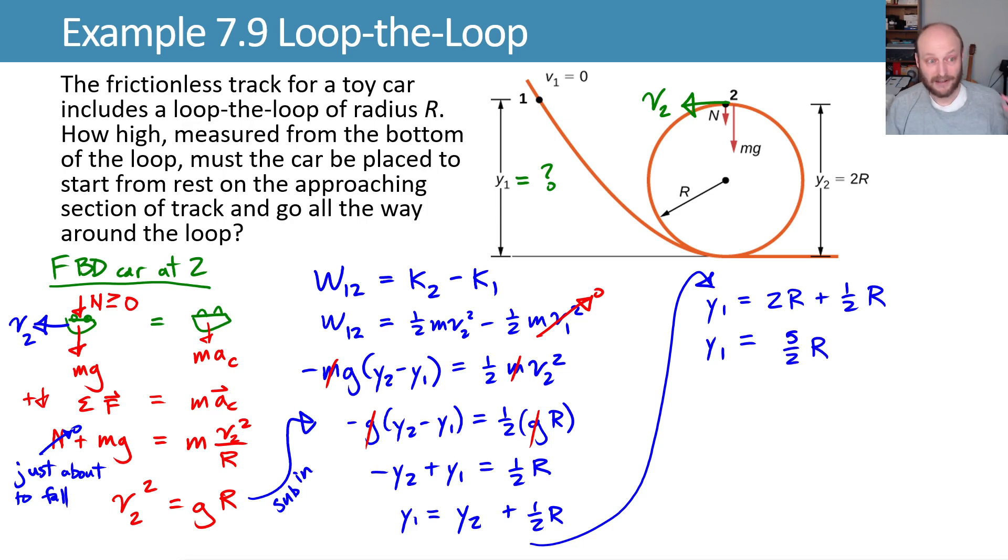And that's what it is, right? That's the answer. So how high measured from the bottom of the loop must the car be placed? Well the car must be placed greater than or equal to 5 halves, or if you prefer 2.5 times the radius of that loop to make it around.